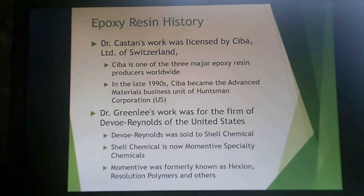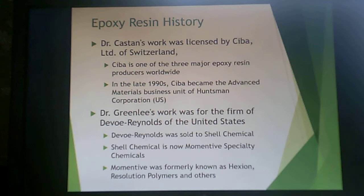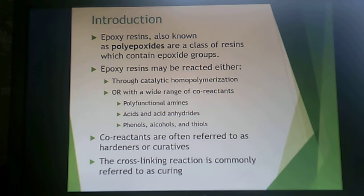Castan's work was licensed by Ciba in Switzerland, one of the three major epoxy resin producers worldwide. In the 1990s, Ciba became Advanced Materials as part of Huntsman Corporation. Greenley's work was for Devoe Reynolds in the United States, which was sold to Shell Chemical, then to Momentive Specialty Chemicals, also known as Hexion, Resolution Polymers, and others. The corporate evolution of epoxy resins has continued over many years.